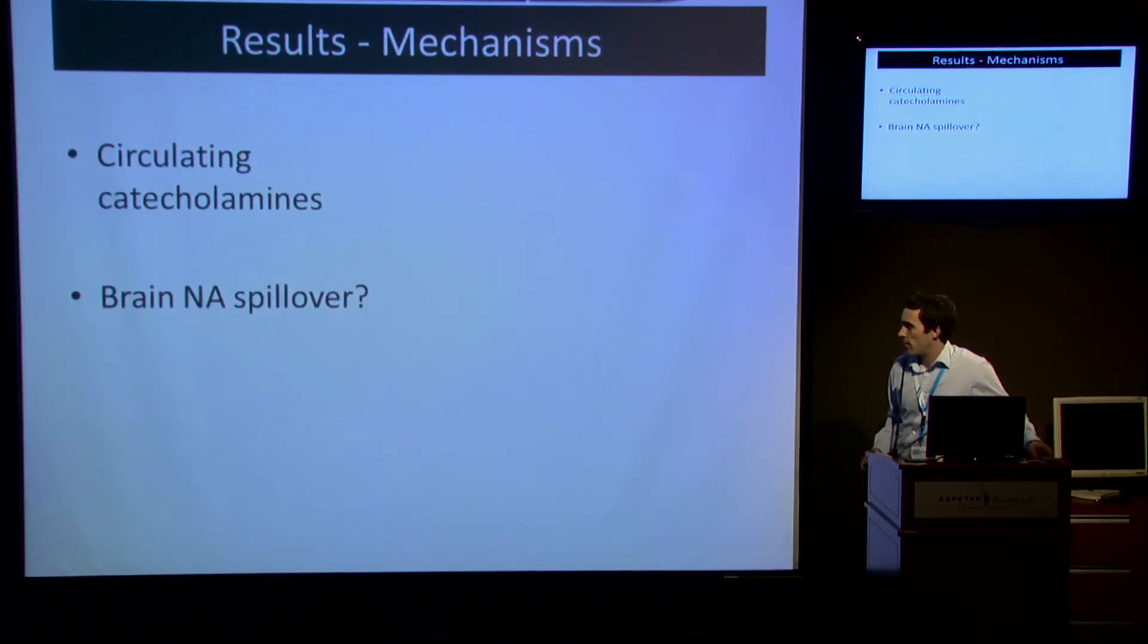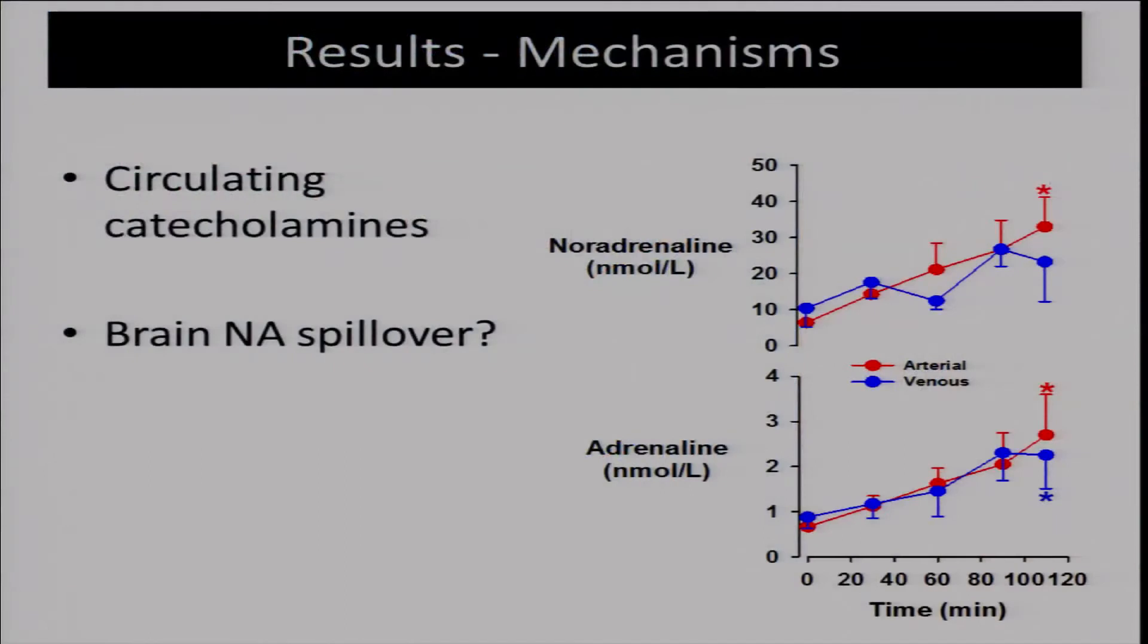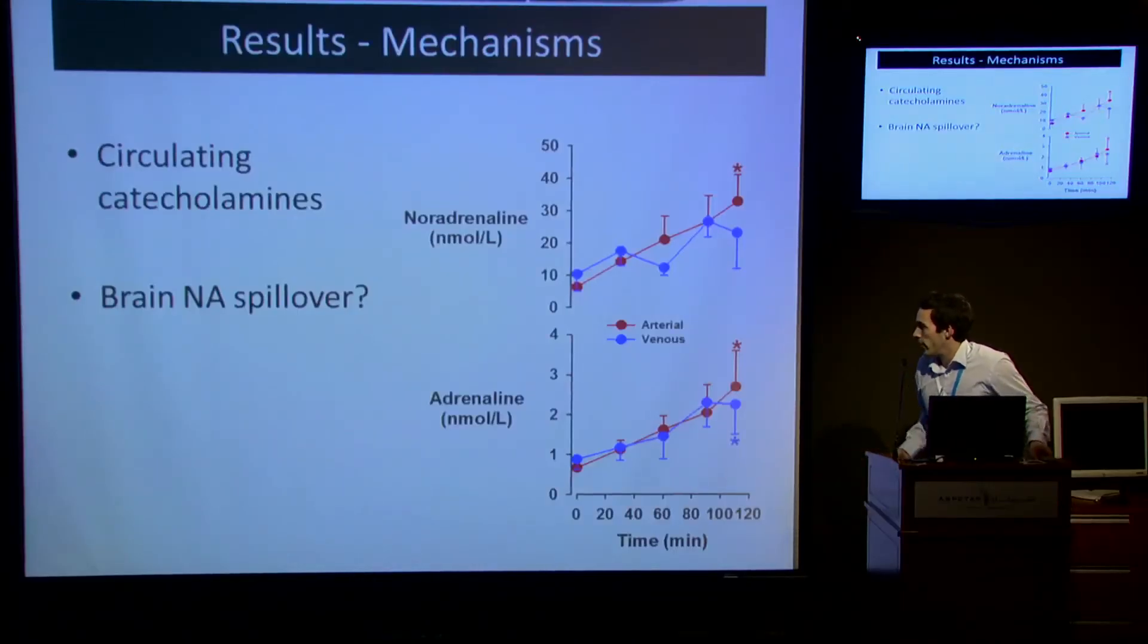Also, circulating catecholamines have an effect. Although we haven't measured brain noradrenaline spillover as such, we found an exponential increase in adrenaline and noradrenaline during exercise. This could be an area contributing to cerebral vasoconstriction and that drop in flow during prolonged exercise.